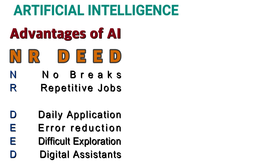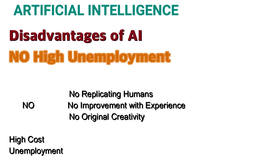The next topic is Disadvantages of AI, and the mnemonic for the same is 'NO HIGH UNEMPLOYMENT'. N stands for No Replicating Humans — it is not possible for a machine to make decisions in unfamiliar situations; it may perform incorrectly or break down. The second N stands for No Improvement With Experience — unlike humans, AI cannot be improved with experience. The next N stands for No Original Creativity — they can help design and create, but they lack a creative mind like humans. H stands for High Cost — creation of AI requires huge costs, and repair and maintenance are also very costly. U stands for Unemployment — replacement of humans with machines can lead to large-scale unemployment.